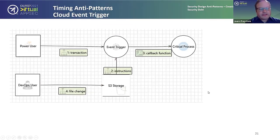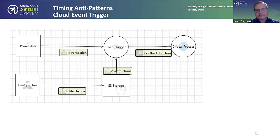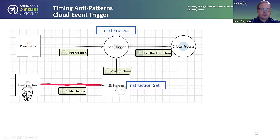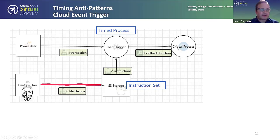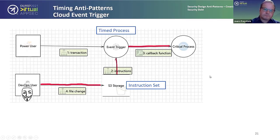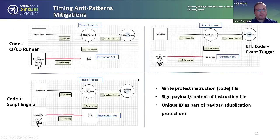The last example in this series is the cloud event trigger. A DevOps user has cloud storage access where an instruction set lives. An event trigger based on changes to that storage calls a callback function like a Lambda or cloud function. Again: instruction set, time process — if someone gets into that role, they could fire this off and call the critical process.